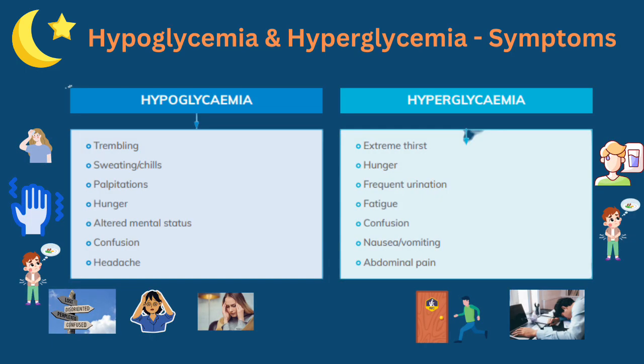How can we differentiate between hypo and hyperglycemia? Hunger is a common symptom of both. In hypoglycemia, there will mainly be tremors, sweating, palpitations, altered mental status, confusion, or headache. In hyperglycemia, there will be extreme thirst, frequent urination, fatigue, confusion, and abdominal pain — which can also be a sign of ketoacidosis.